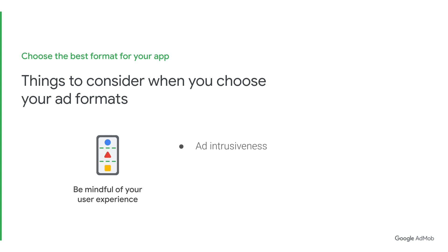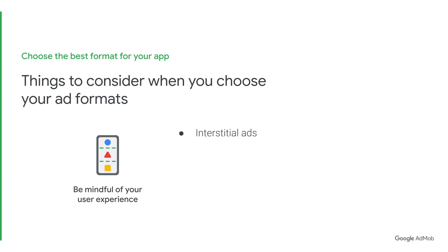Last but not least, when deciding which ad format to use, be mindful of the user experience. Positive ad experiences can earn more revenue over time because happy users are more likely to keep using your app. If your app has lots of different levels or loading screens, consider integrating interstitials when users would otherwise be staring at a static screen. Make sure to show a loading screen before and after the interstitial so the user isn't trying to click something when you're planning to show an ad. If you have blank space on the top or bottom of the screen, consider using banner ads. Native ads are great if you're willing to design your own ads to blend in with elements of your app. If your app has in-app rewards, rewarded ads can motivate users to engage with ads.